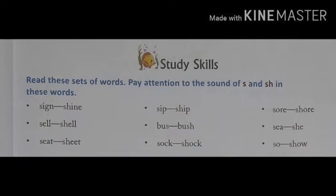Another one is B, U, S — Bus. Bus aap logo ko pata hai — gaari. And another word is B, U, S, H — Bush. Bush matlab jhaari — choti choti jhaariya ko bola jata hai bush. Another one is S, E, A, C — Sea. Sea matlab nadhi, samandar. And another word is S, H, E — She. She hum log tab use karte hai jab hum kisi ladki ke baare mein bata rahe hote hain.